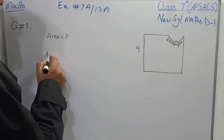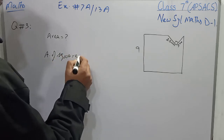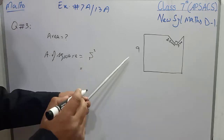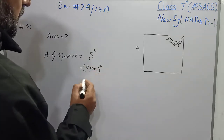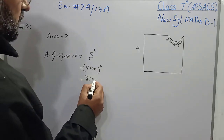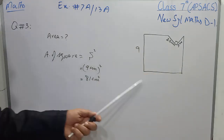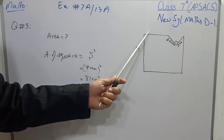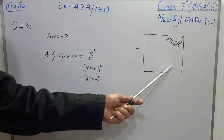First I will find the area of the square. Its formula is side squared and the side is 9 cm. When we take the square of 9, it will become 81 cm². Now we have to subtract the triangle from the area of the square and we will have the area of the figure.